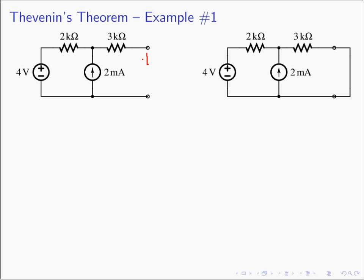We've removed R_L — it's now an open circuit — and we're looking for VOC. Since it's an open circuit, there is no current flowing; the current going in this direction must be 0 amperes because there is nowhere for it to go. If no current is flowing through the resistor, then we have 0 voltage drop across it, so it's going to act like a wire.